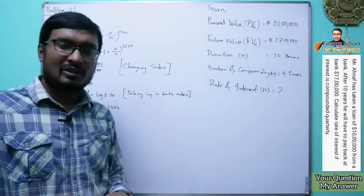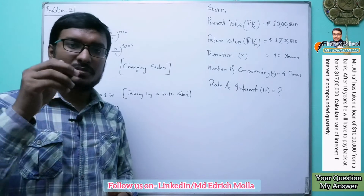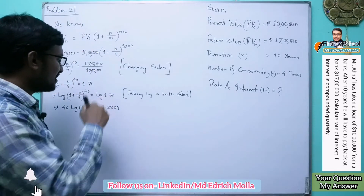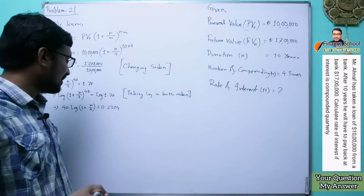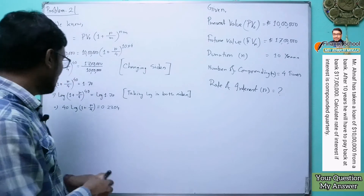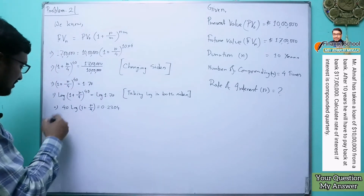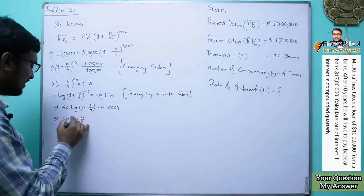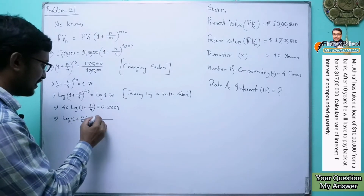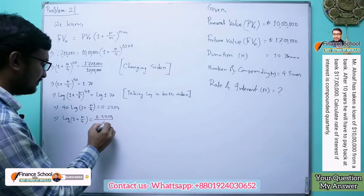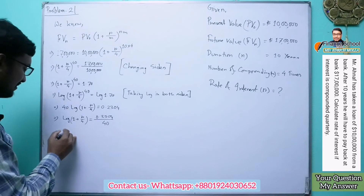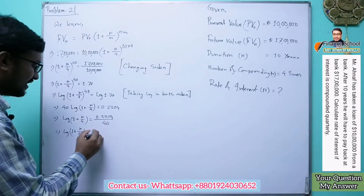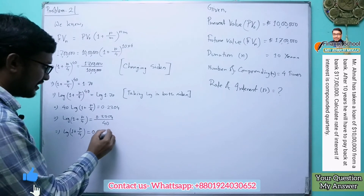To find the value of log on your scientific calculator, press the log symbol, then input 1.7 and press the equal button — you will get 0.2304. Now dividing both sides by 40, we get: log(1 + r/4) = 0.2304 divided by 40, which equals 0.00576.